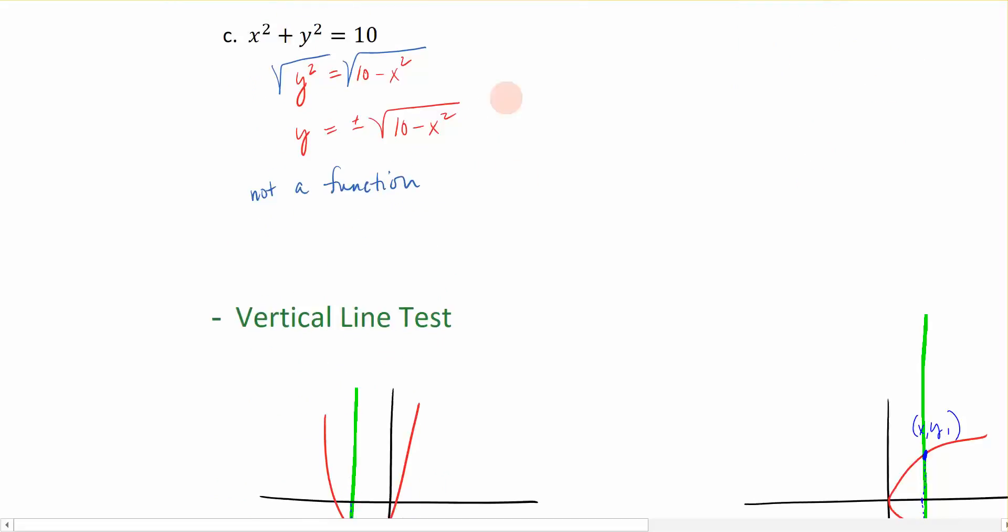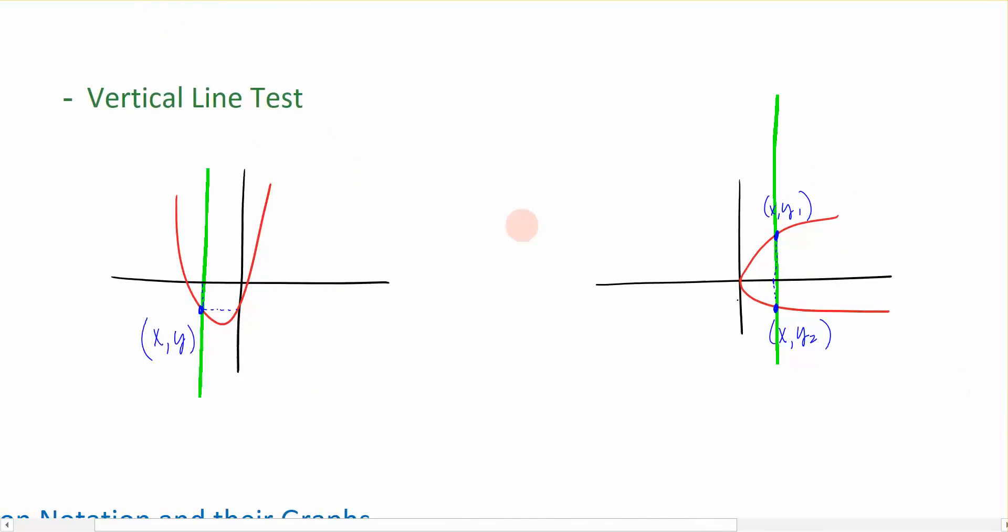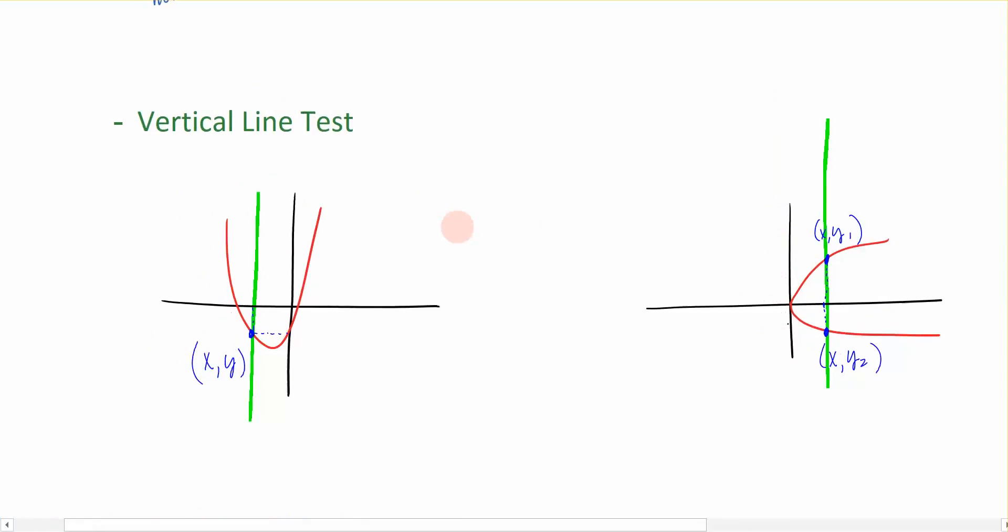In high school or algebra 1, you learn what we call the vertical line test. So if I have a graph, here I have a parabola, and the vertical line test says if I drop a vertical line or pass a vertical line across my graph, then if it touches the graph only at one place, it's considered a function.